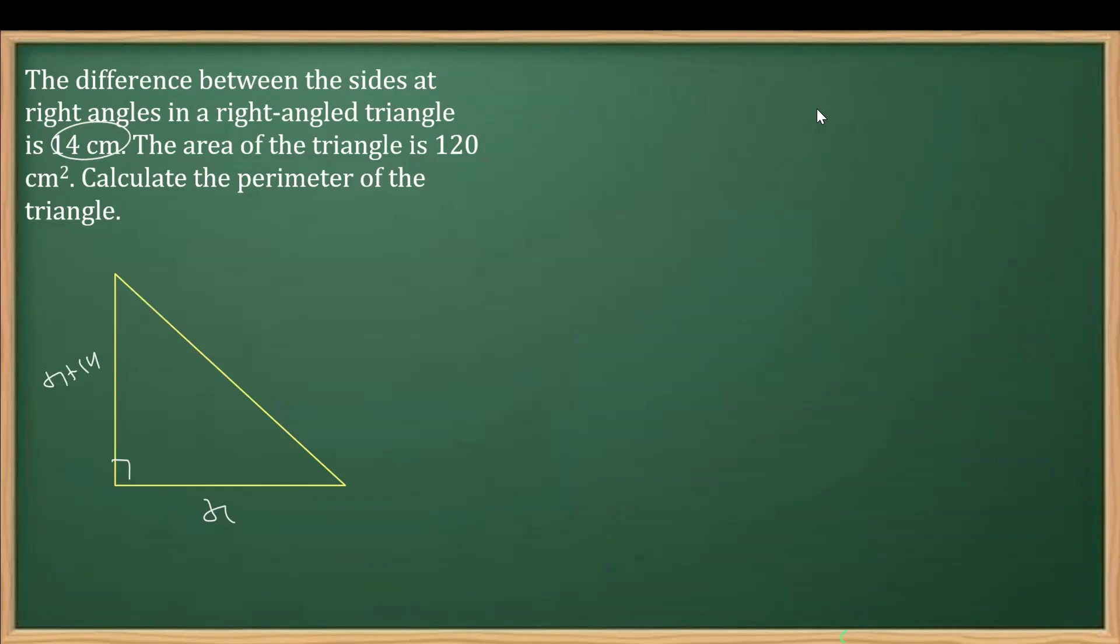Now further, we are given the area of this triangle. As you can see, the area of the triangle is 120 centimeter square, and then what we have to find out is the perimeter of the triangle.